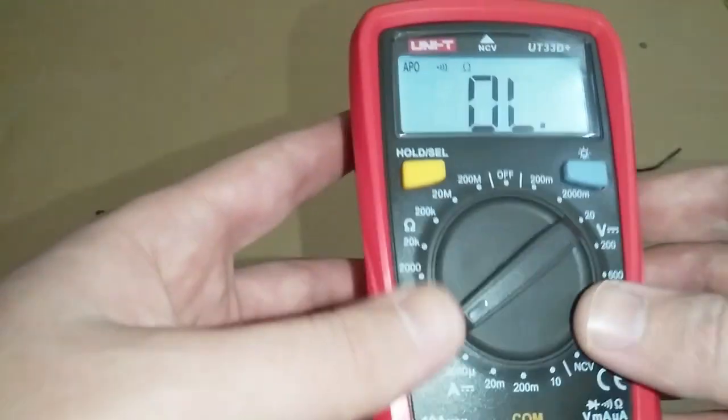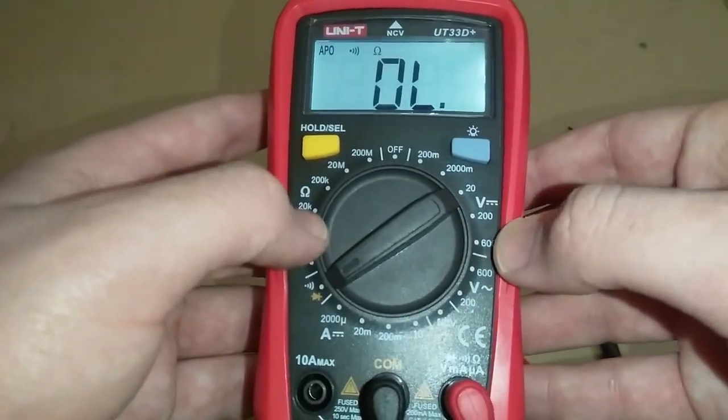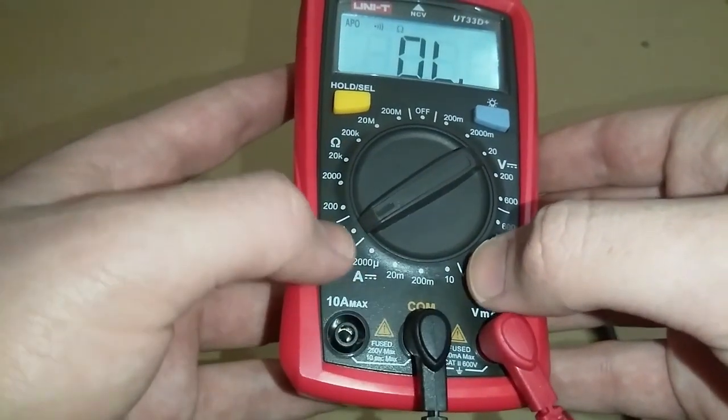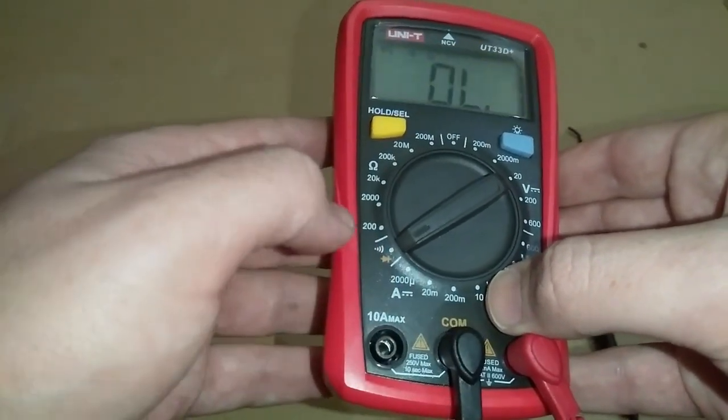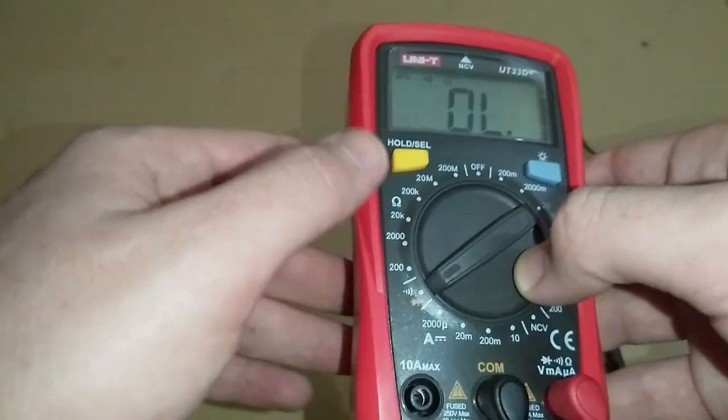You can measure DC voltage up to 600 volts, AC up to 600 volts. It also has a diode test. You can measure DC current also and resistance up to 200 mega ohm.